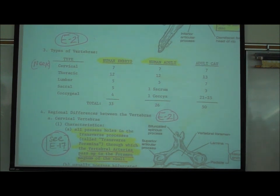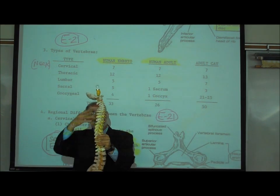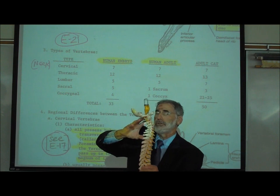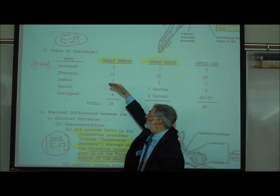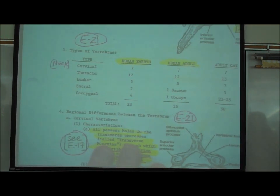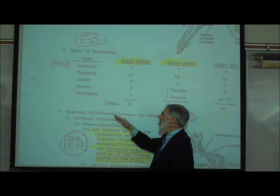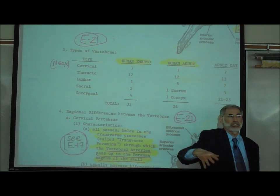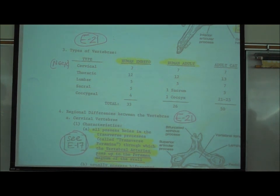On E21, the vertebral column is made up of vertebrae divided into regions: cervical vertebrae (neck region), thoracic vertebrae (chest), lumbar (lower back), sacral, and coccygeal (tail vertebrae).